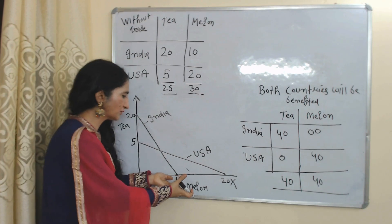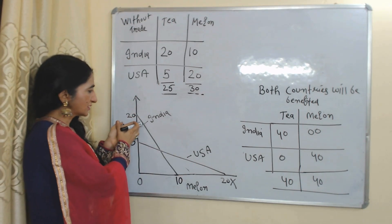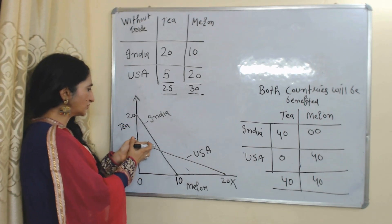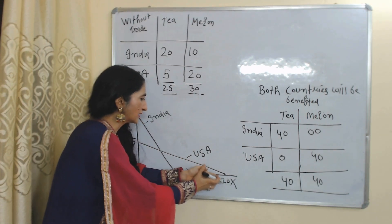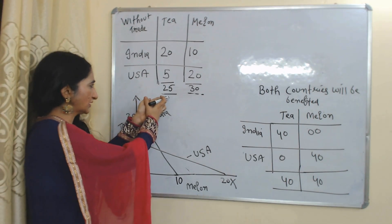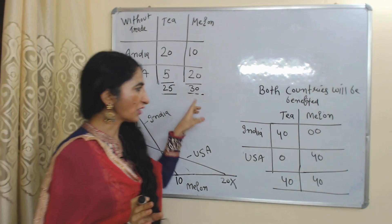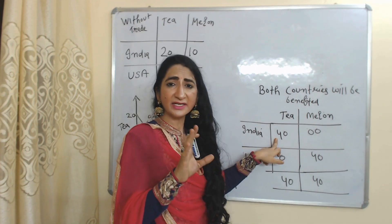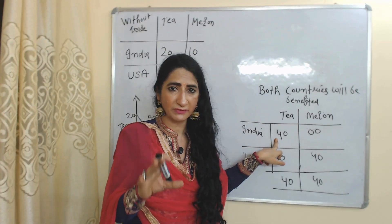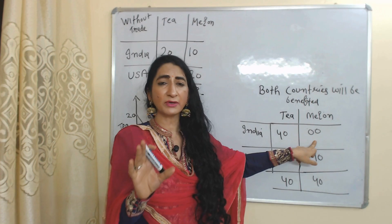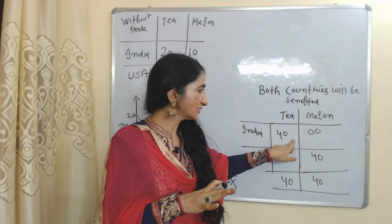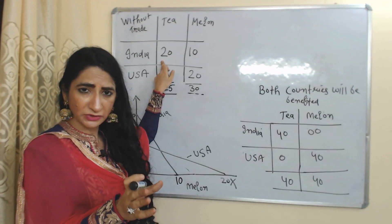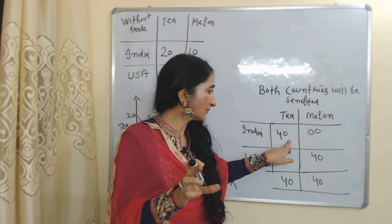In the diagram, the x-axis shows production of melon and the y-axis shows production of tea. This is India's production line and this is USA's production line. Before trade, India is producing 20 units of tea and 10 units of melon; USA is producing 5 units of tea and 20 units of melon. After trade, India increases production of tea because India has absolute cost advantage in tea, and stops production of melon. Now India is using all 16 hours of labor in production of tea, so production of tea has increased from 20 units to 40 units.